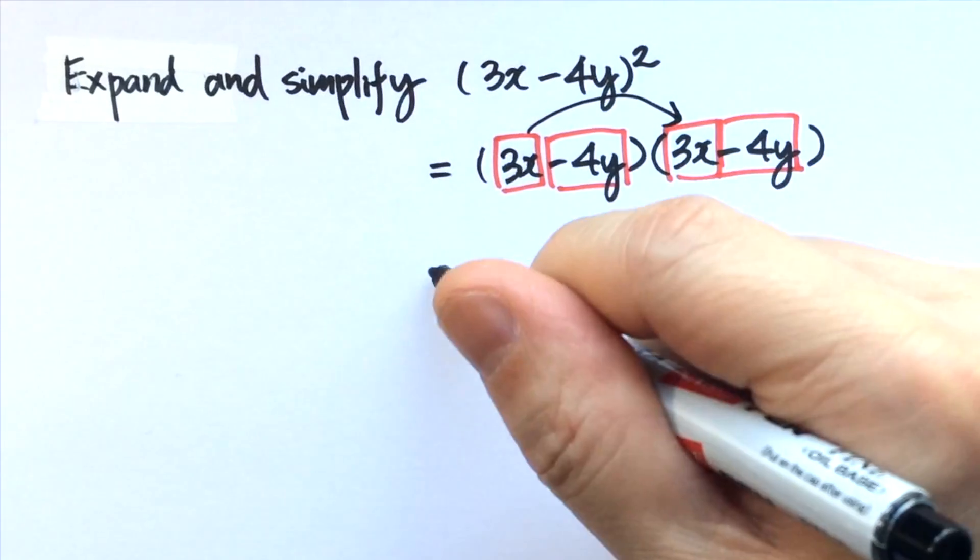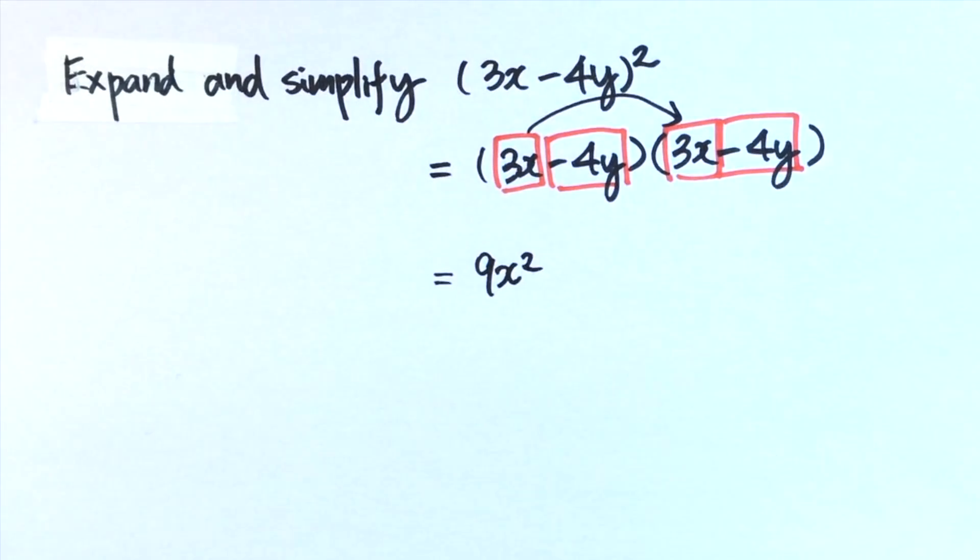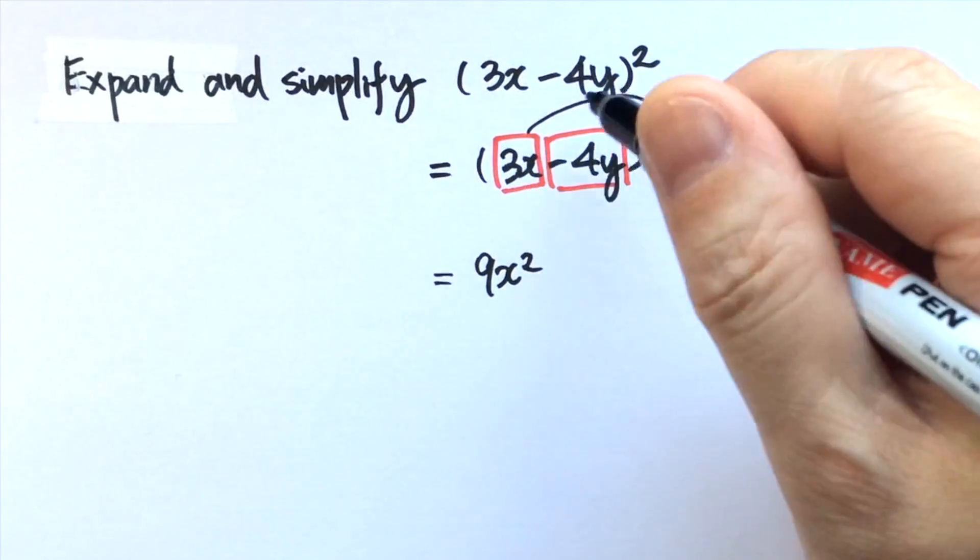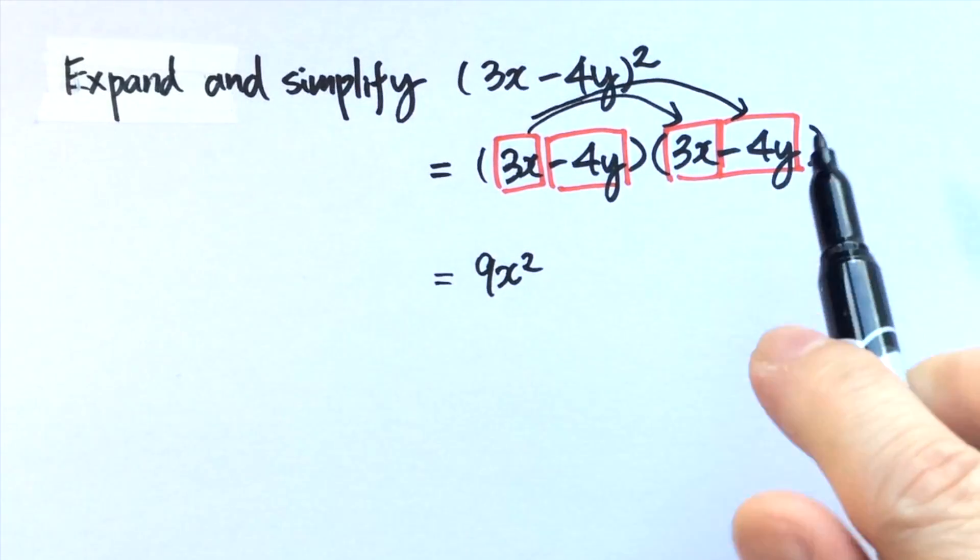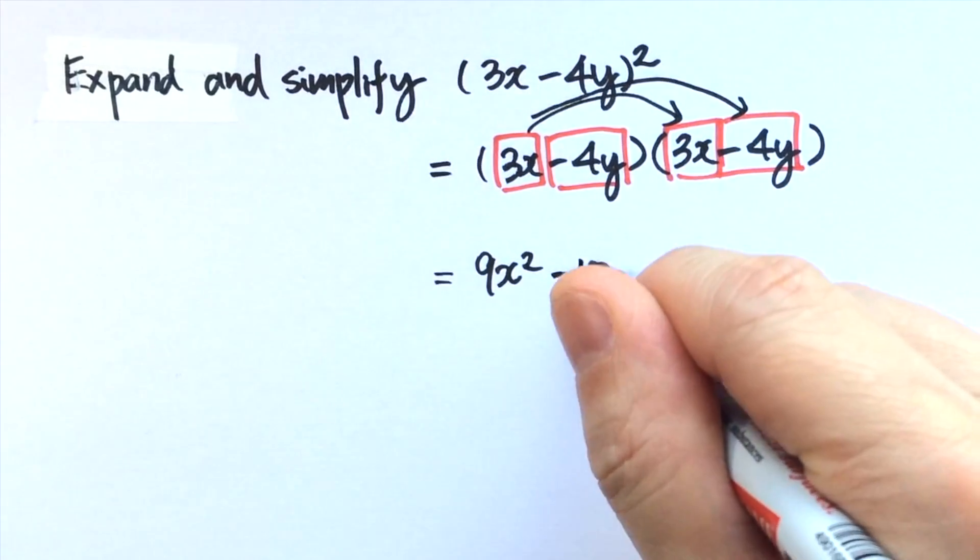3x times 3x, you get 9x squared. 3x times negative 4y, multiply carefully: 3 times negative 4 equals negative 12, x times y, you get xy.